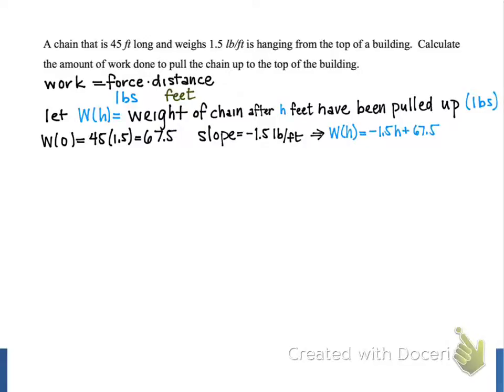So this weight function gives us our force in the calculation above, so next we need to represent the distance that we're lifting the chain. We're going to let Δh be the distance the chain is lifted, just a slice of lift, measured in feet. We're going to imagine just lifting it a small distance, so that the weight of our chain is constant.